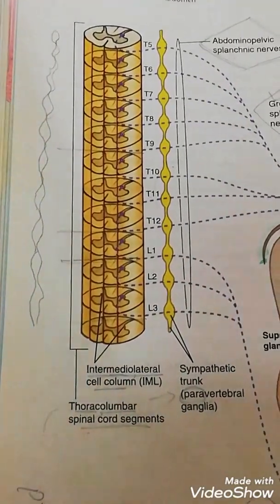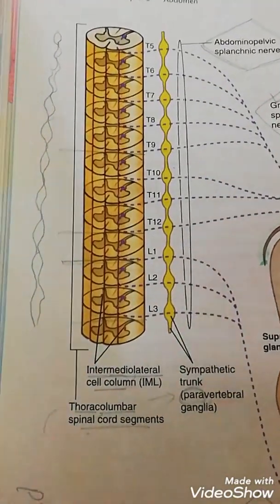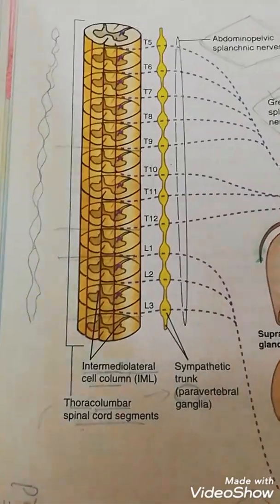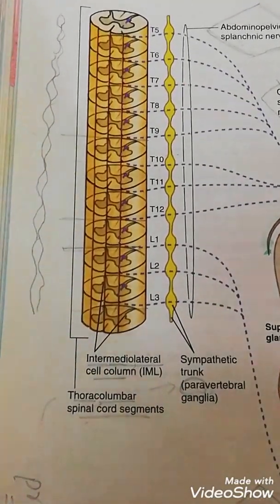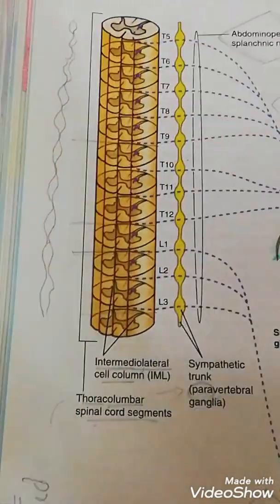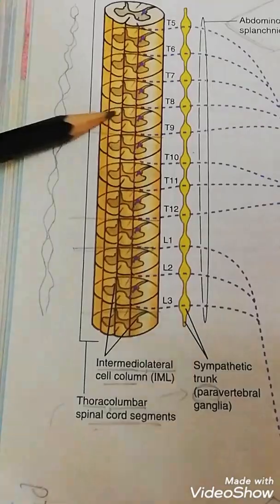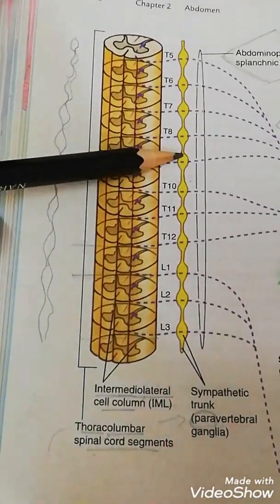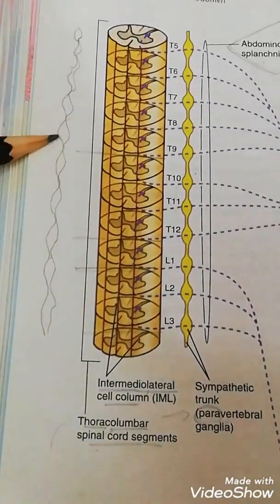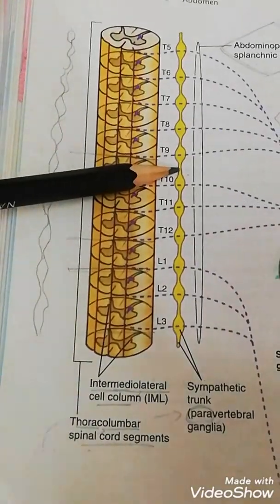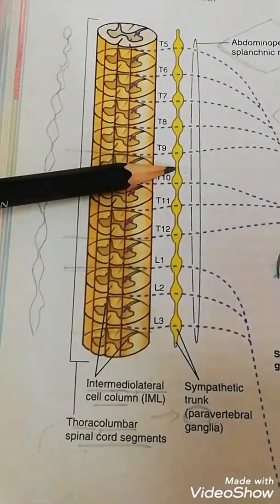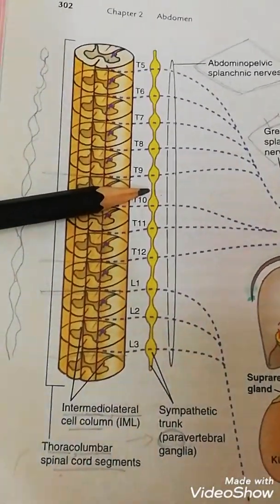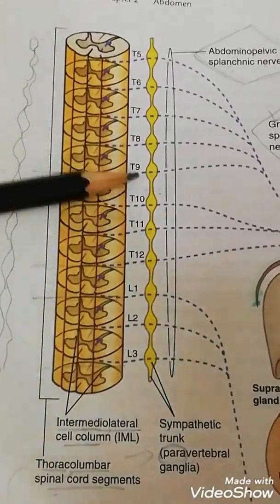Look at the picture — we have to learn about the sympathetic and the parasympathetic innervation of the abdominal viscera. Here you can see the cut section of the spinal cord, and on both sides you can observe the sympathetic ganglia chain. Let's see how sympathetic innervation takes place.